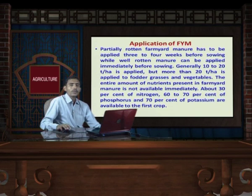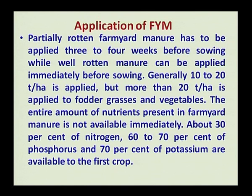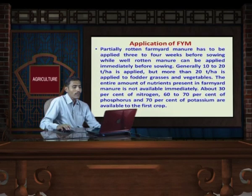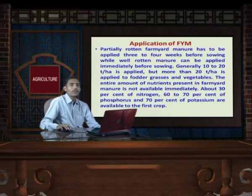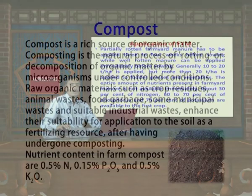So that it will decompose in the soil and make the nutrients available to the plant at the time of need. Generally, 10 to 20 tonnes per hectare of FYM is applied. Some amount of nutrient is not available immediately because it takes time for decomposition. About 30 percent of nitrogen, 60 to 70 percent phosphorus, and 70 percent potassium are available to the first crop. The remaining will be available to the next succeeding crop.